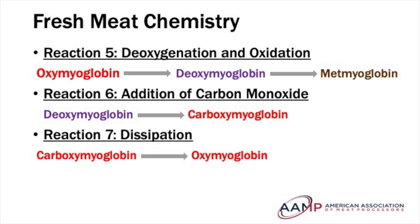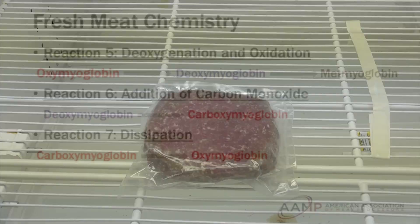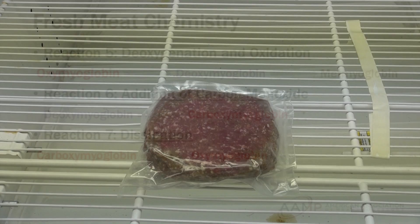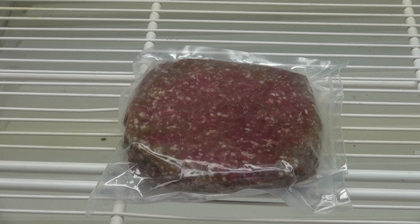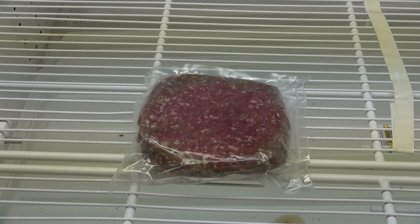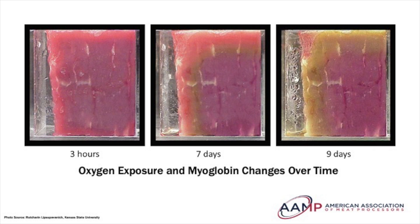The fifth reaction is called deoxygenation and oxidation — the overall conversion of oxymyoglobin to metmyoglobin. But in this reaction, oxymyoglobin must first be converted to deoxymyoglobin before it can then be converted to metmyoglobin. Metmyoglobin formation begins beneath the cut surface of the meat, where oxygen concentration is lower and deoxymyoglobin is present. The deoxymyoglobin beneath the meat surface slowly converts to metmyoglobin over time and spreads outward to the surface where it is visible.